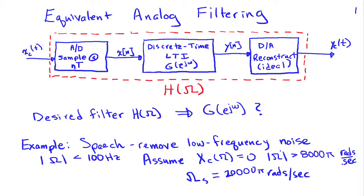The question is: with these parameters, how would I choose my discrete-time filter G(e^jω) so that I implement a high-pass filtering characteristic where I eliminate all energy below 100 Hz, which I'm assuming to be noise?